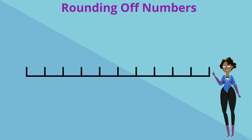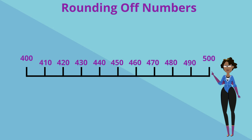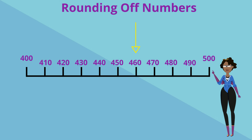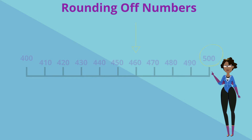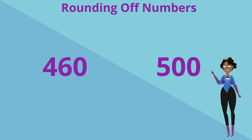Our last example on the number line: let's round 460 to the nearest hundred. We can see that 460 is greater than the halfway mark of 450 and therefore it's closer to 500 on the number line. So we'll round up to 500. So 460 rounded to the nearest hundred is 500.